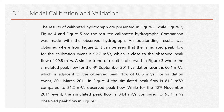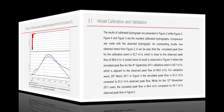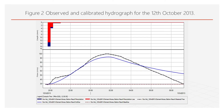The results of the calibrated hydrograph are presented in Figure 2, while Figures 3, 4, and 5 show the validated hydrographs. Comparison was made with the observed hydrograph. An outstanding result was obtained from Figure 2. It can be seen that the simulated peak flow for the calibration event is 92.7 m³/s, which is close to the observed peak flow of 99.8 m³/s.